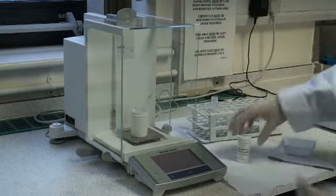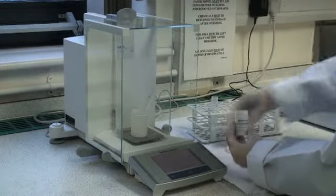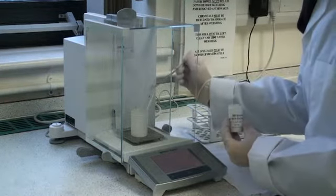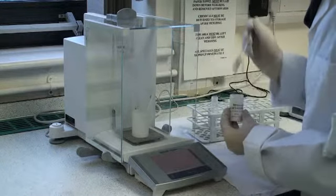Accurately weigh 0.5 grams of milled malt sample into a polypropylene tube or a glass tube, approximately 17 ml capacity.